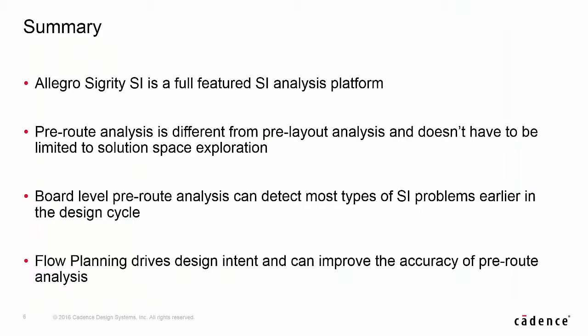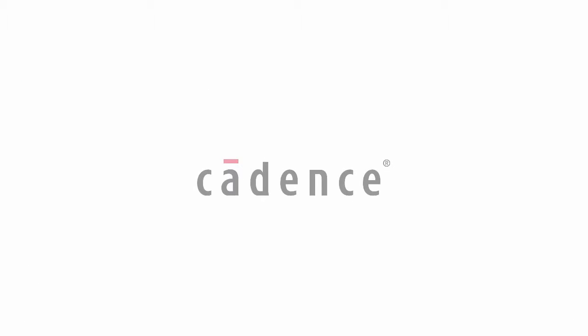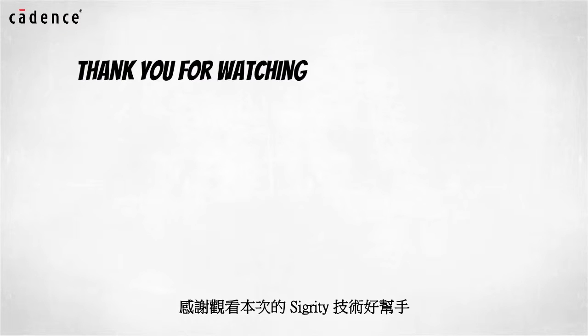In this demo, you've seen just a few of the features found in Allegro Sigrity SI. We've seen that pre-route and pre-layout are in fact different types of analysis, and that pre-route can be used to detect SI problems earlier in the design cycle. Pre-route is the best time to find out if you need any terminators, as they are too painful to add post-route. And finally, we've seen that because flow planning drives design intent in terms of how the routing will take place, it can be useful at the pre-route stage to improve the accuracy of SI analysis. Flow planning can also lead you to placement edits or changes, which are also painful after investing any time in routing. Thank you for watching another edition of Sigrity Tech Tips.